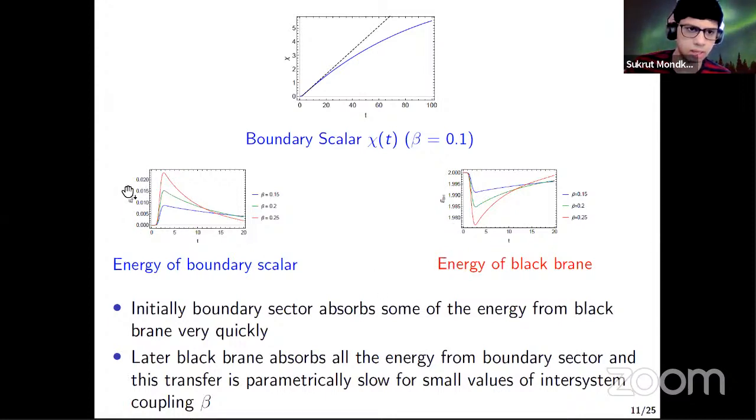So the lower two plots are for the energies of each subsector. So the energy of the boundary sector E_kinetic, which will be half chi dot square. So at late time, since chi becomes constant, it will go to zero. And yeah, so as anticipated, all the energy will go to the black brane at late times. As anticipated from the quasi-normal mode analysis, at early time, some of the energy from black brane is absorbed by this boundary sector. And this is driven by that unstable mode that I showed you. Whereas at late time, all the energy goes to the black brane. And this late time transfer is driven by this quasi-hydro mode, which is parametrically close to origin.